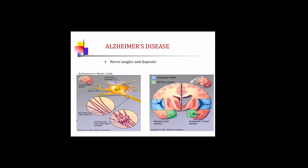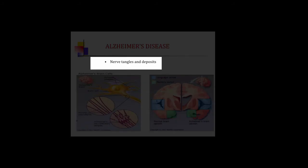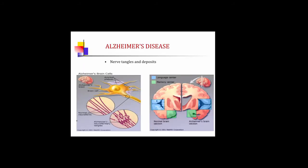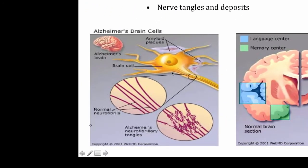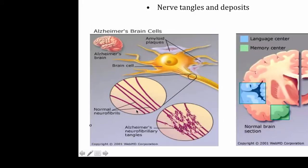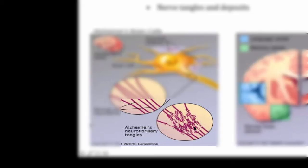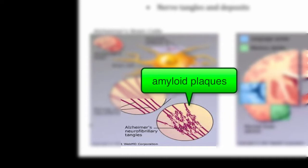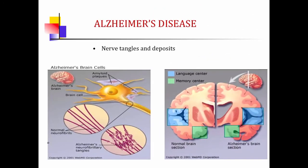In Alzheimer's disease, there is a problem with nerve tangles and deposits in the brain cells. If this represents a nerve in the brain, the tiny parts are called neurofibrils — nerve fibers. In a healthy brain, these are nice straight fibers. However, in an Alzheimer's patient, the brain cells show tangles and deposits of amyloid plaques that disrupt the fibers, leading to an inability to transmit nerve impulses and neurotransmitters.